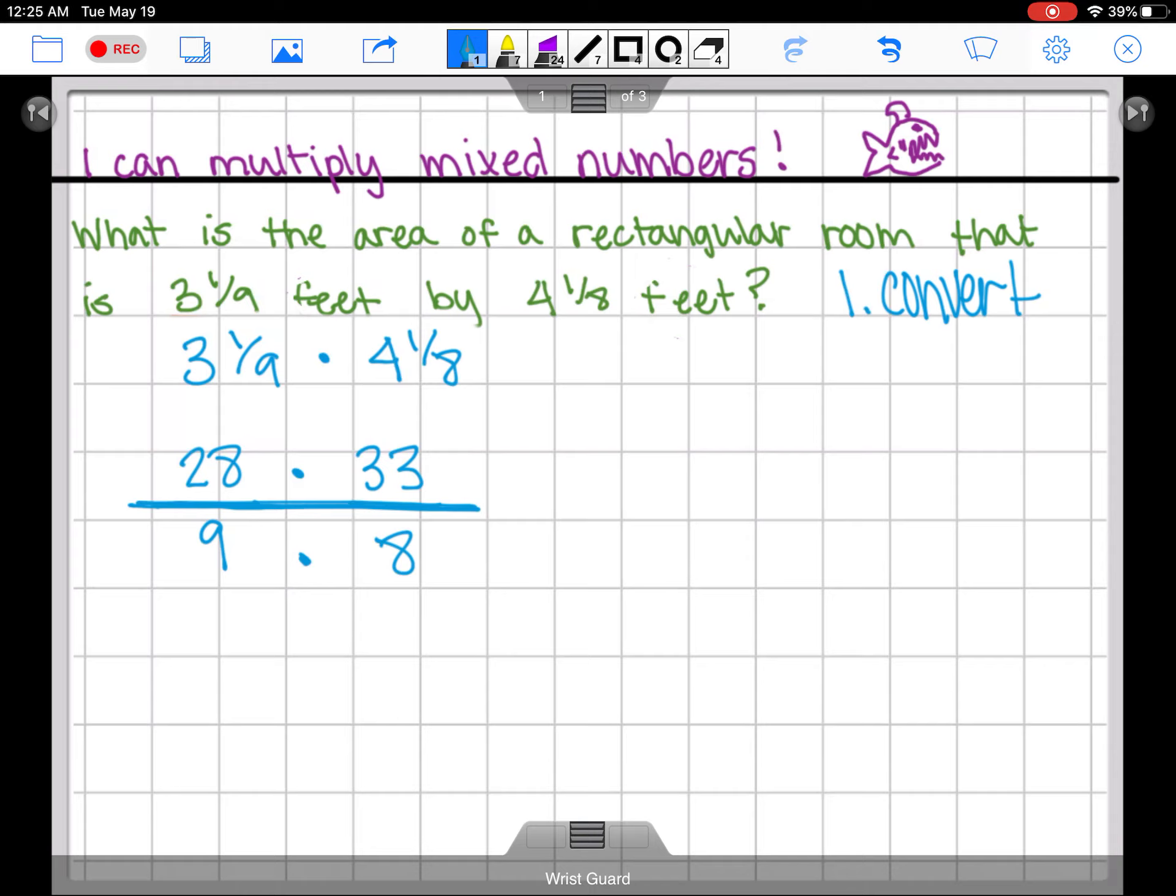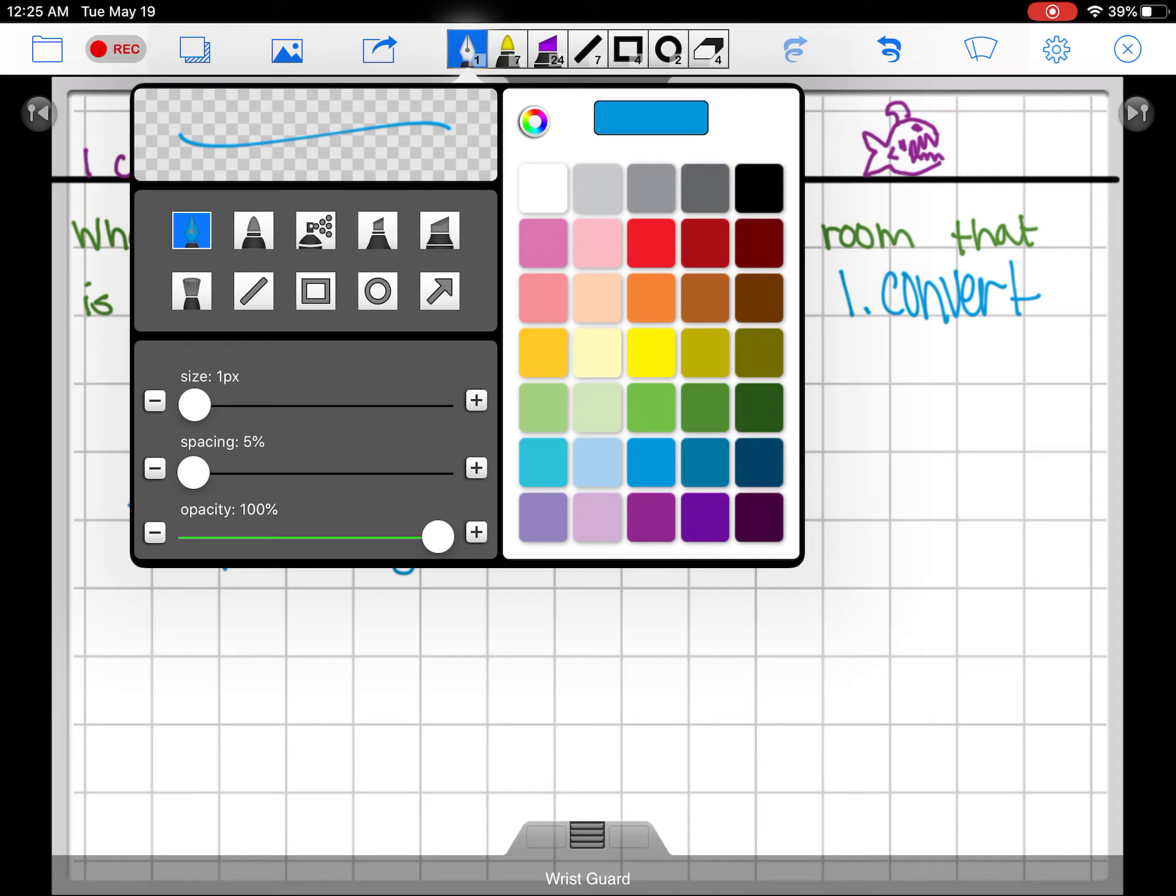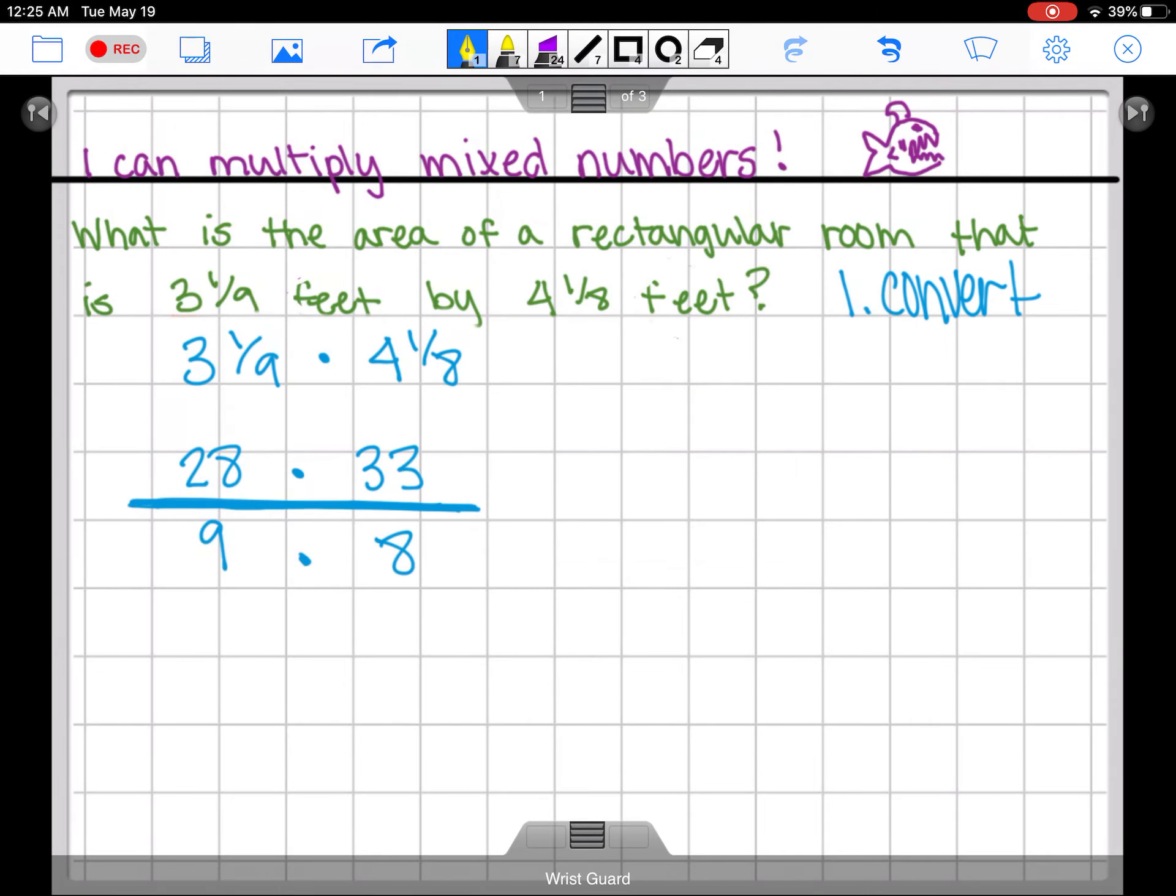Instead I'm going to simplify because I turned both of my fractions into one big fraction. Now I can do whatever I want to the top and the bottom with any of these numbers. So what that means here is I don't have to simplify this fraction and this fraction, instead I could simplify this fraction or this fraction.